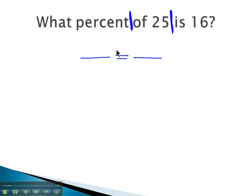Is over of equals percent over 100. Is we see is with the number 16. Over of. Of is with the number 25. Equals percent. What percent? That must be our variable. Over 100.